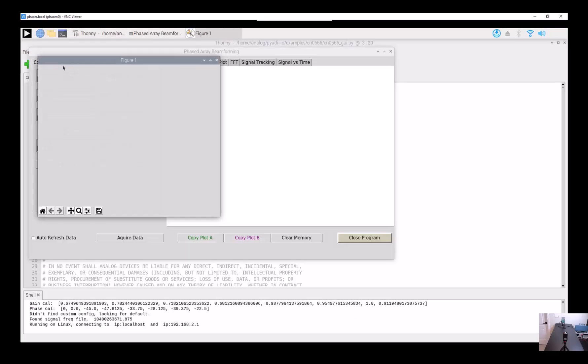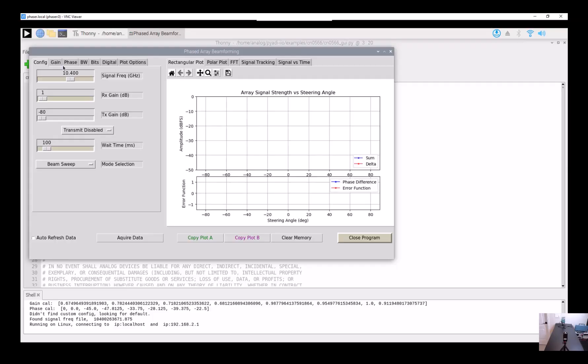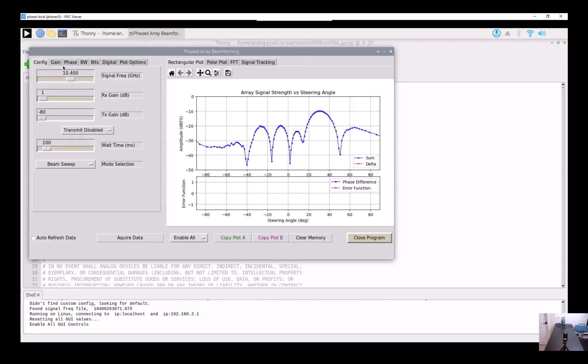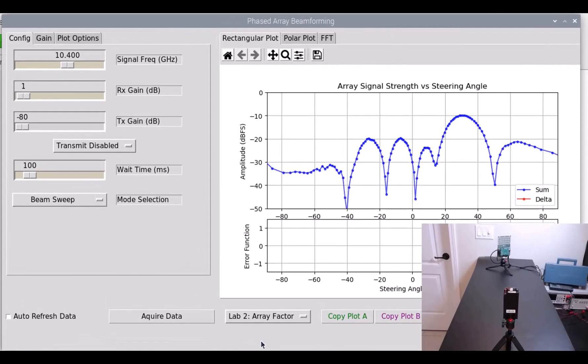So let's run our Python program again. But this time, we're going to sweep the phase deltas of all the elements and plot the peak amplitude we receive from each of those states. So this generates now a pretty cool plot of the array factor. And we generate this data in exactly the same way that we did in the previous lab.